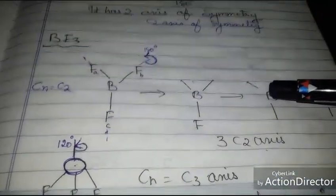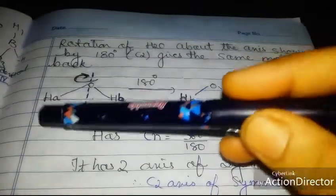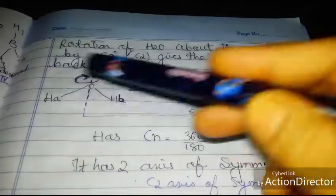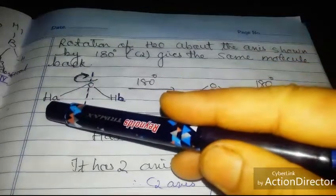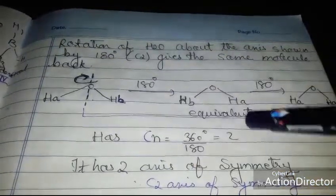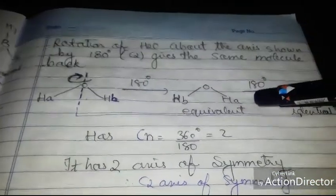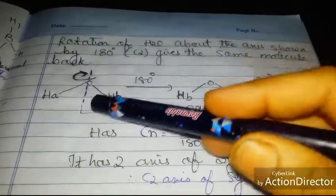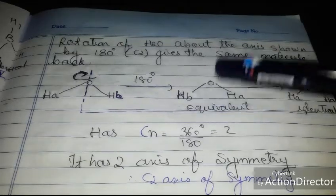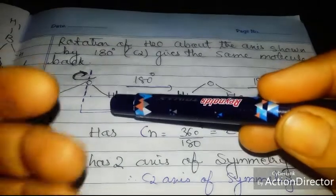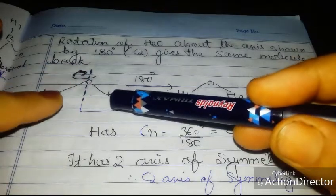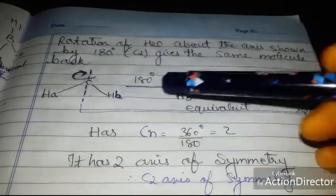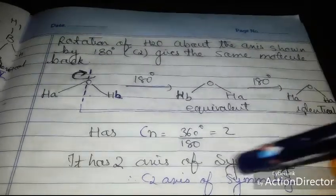Let us take the example of the water molecule H₂O. Applying 180-degree rotation about the axis of symmetry: HA comes here and HB goes there, giving an equivalent molecule. Applying 180-degree rotation again: HB and HA return to their original positions, giving an identical molecule. The order of this axis is C₂ = 360°/180° = 2, so H₂O has a C2 axis of symmetry.